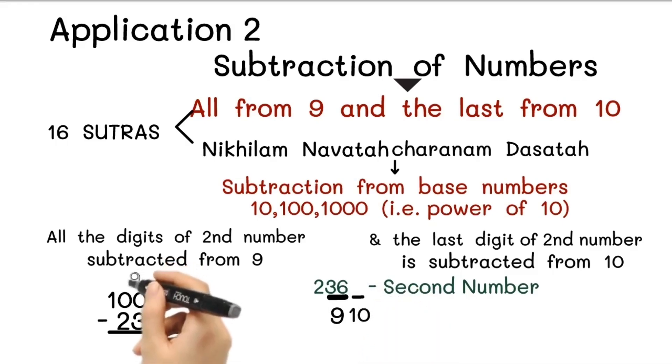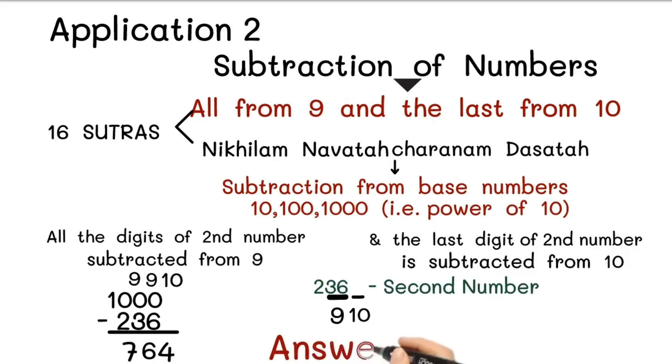9 minus 2 equals 7. 9 minus 3 equals 6. And 10 minus 6 equals 4. So in this way we got the answer 764. This is how you can find the answer by using this Nikhilam Sutra.